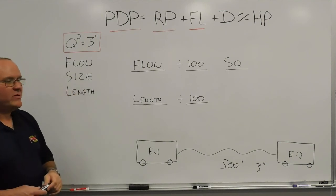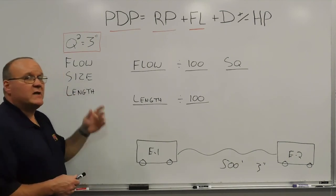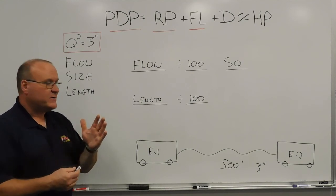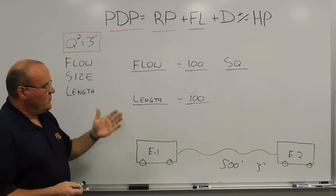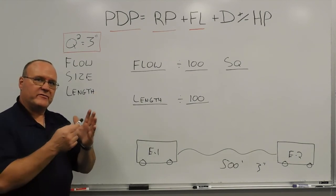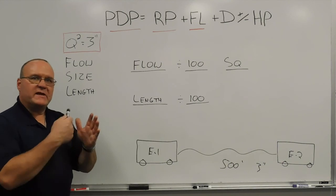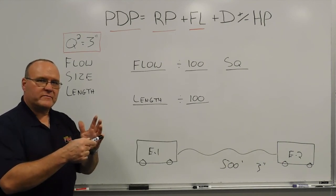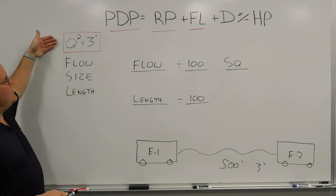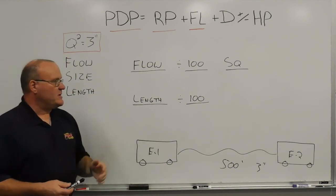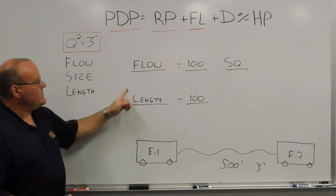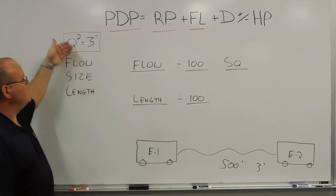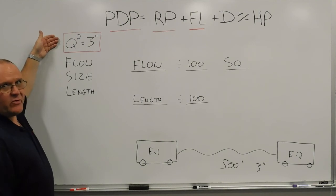A quick refresher from previous training minutes: when we use the hand method, we're using the hand as a calculator and a memory jogger. From 100 to 500 gallons a minute, left to right, each finger is a gallon-per-minute flow: 100, 200, 300, 400, or 500. To get the 3-inch hose number, we take our flow, divide it by 100, and then square that number to get our 3-inch friction loss per 100 feet.